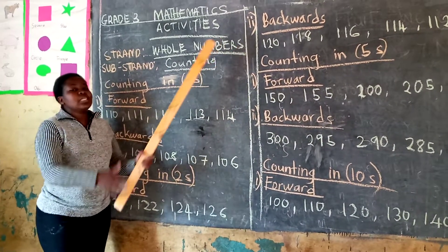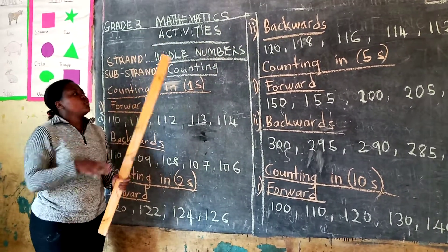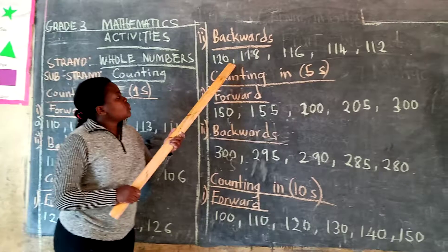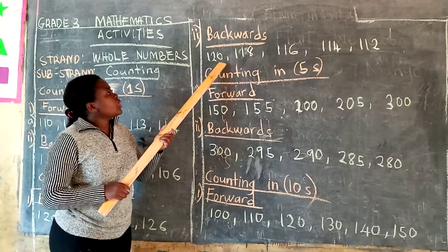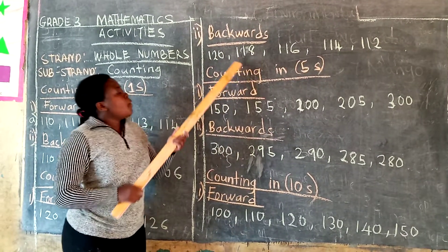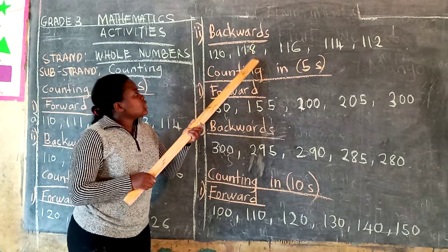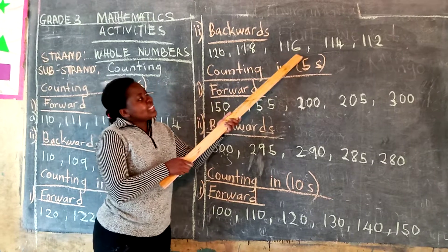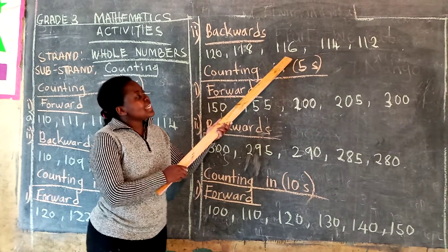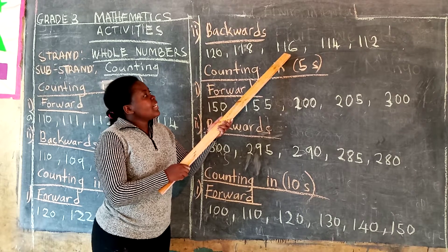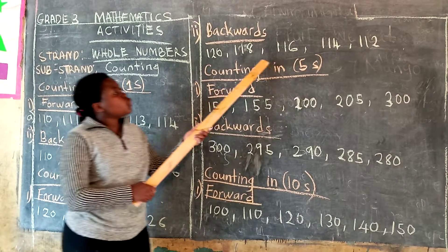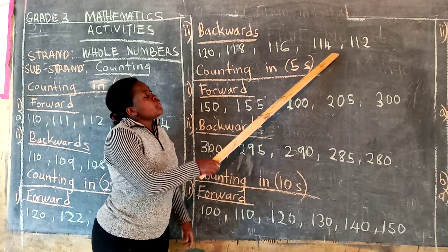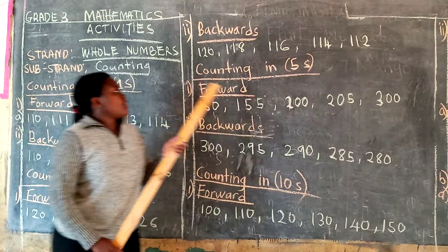Now come back to backwards. When you are moving backwards, you subtract by two. So 120 minus 2, you will get 118. Then 118 minus 2, you will get 116. Then 116 minus 2, you will get 114. Then 114 minus 2, you will get 112. We are through counting in twos.